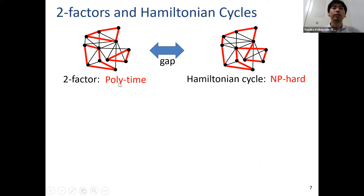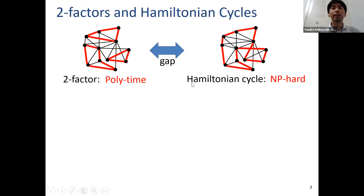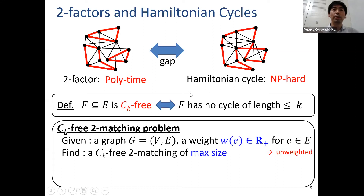A two-factor is a vertex-disjoint collection of cycles covering all vertices, so we can use many cycles. On the other hand, if we want to cover all vertices using only one cycle, that is a Hamiltonian cycle — which is of course NP-hard. So there is a huge gap between these two problems, and we are interested in problems that lie between them.